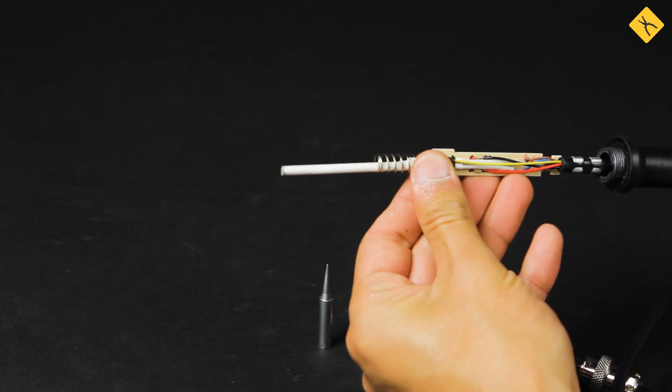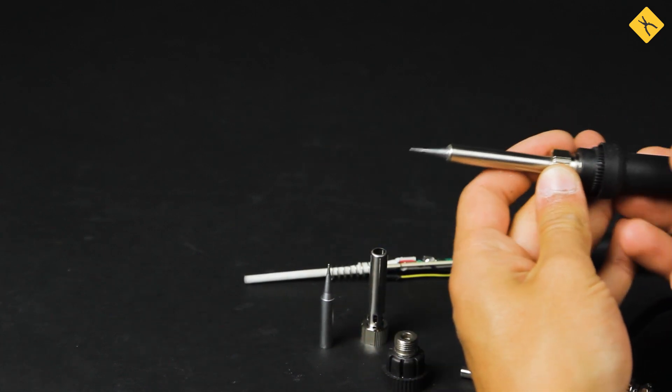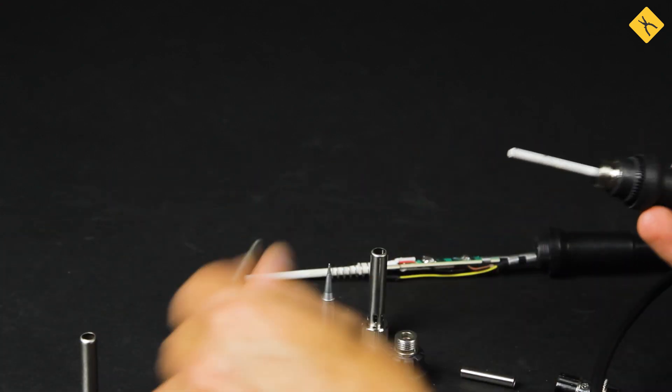In soldering stations like you, for example, the soldering tip and the heating element have a tiny air gap in between them. This affects the heat transfer. Other models, for example, Akta 301, don't have this issue.